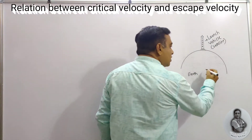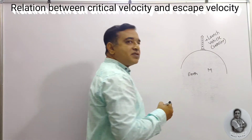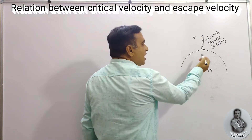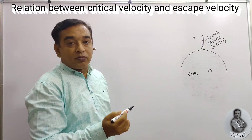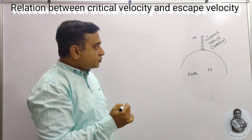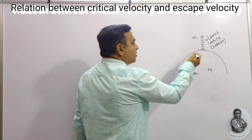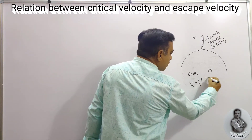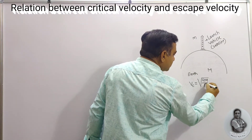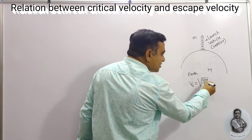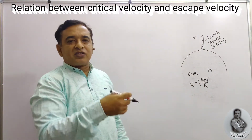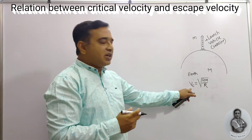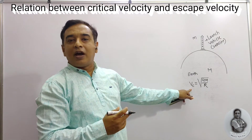Certain factors we are going to note: the mass of the earth is capital M, while the satellite has mass small m. We are about to launch this satellite from the earth's surface. On the surface, the critical velocity is given by vc = √(GM/R), since height h is zero at the surface.